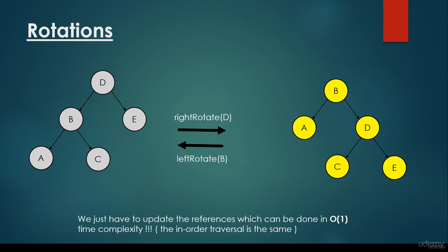In the previous video we have been talking about rotations. We have a subtree on the left, and we are able to make a rotation. We just have to rotate the root node, which is node D, and after the right rotation the root node is going to be node B, and B's right child is going to be the previous root node. If we make a left rotation on this right subtree, we are going to end up with the subtree we started with.